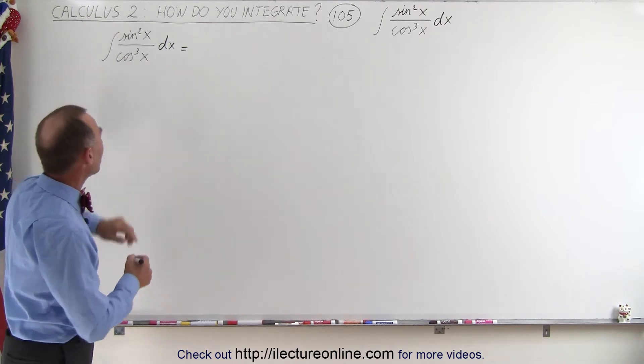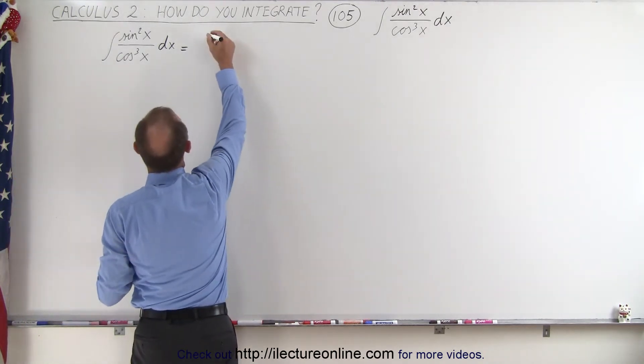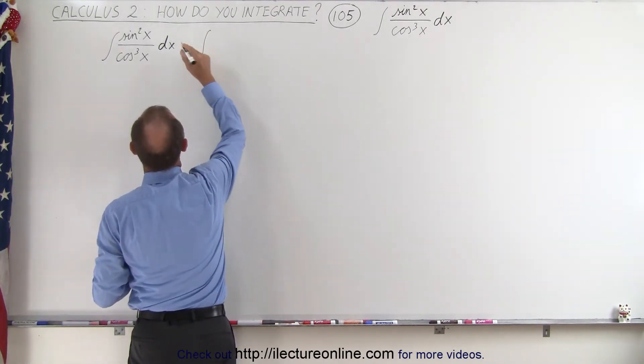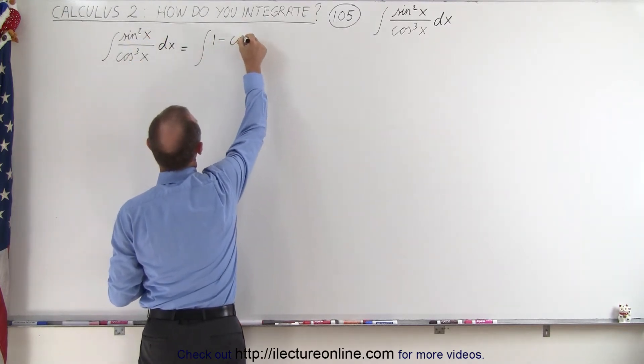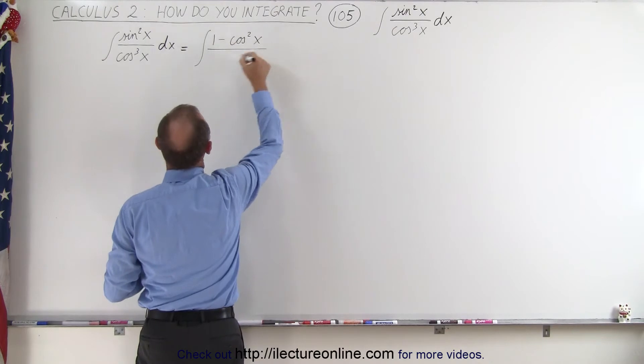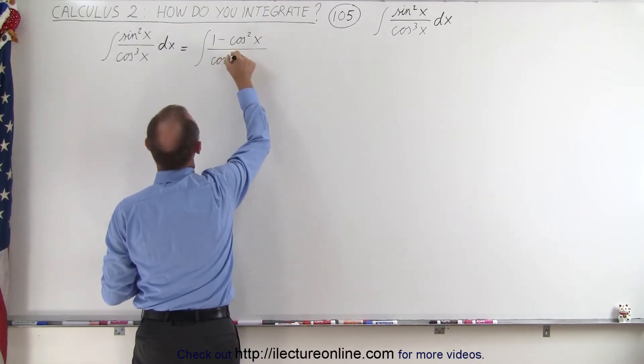First, we're going to rewrite the numerator as follows. This is equal to the integral. Instead of the sine square of x, we can write 1 minus the cosine square of x divided by the cosine cube of x dx.